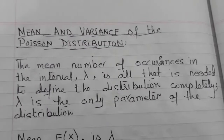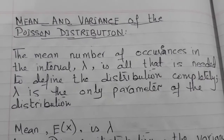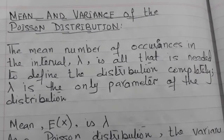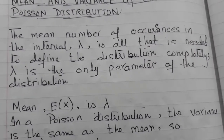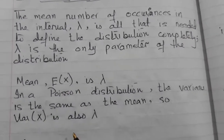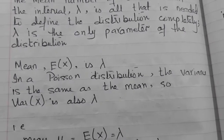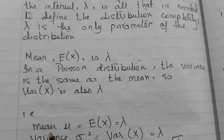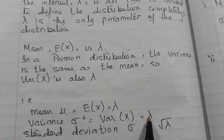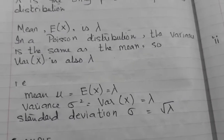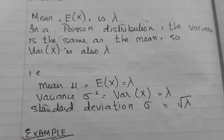Now let's look at the next syllabus concept: the mean and variance of the Poisson distribution. We have seen that the Poisson distribution is described by only one parameter, lambda. In the Poisson distribution, lambda represents both the mean and the variance. So E(X) = λ and Var(X) = λ, and the standard deviation is the square root of lambda. Why mean and variance are equal to lambda is beyond the scope of the syllabus, so we will not go into that detail.